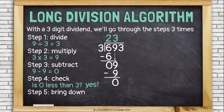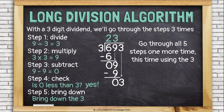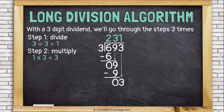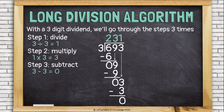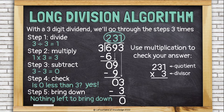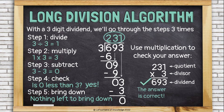Bring down — I do have another digit. I'm going to bring the three down to sit next to the zero, then go through the steps one more time. Divide: three divided by three is one. Multiply: one times three is three. Subtract: three minus three is zero. Check: is zero less than three? Yes. Bring down — nothing left, so I'm finished. The answer is 231. Let's check: 231 times three — three times one is three, three times three is nine, three times two is six. We got the dividend, so 231 is correct.